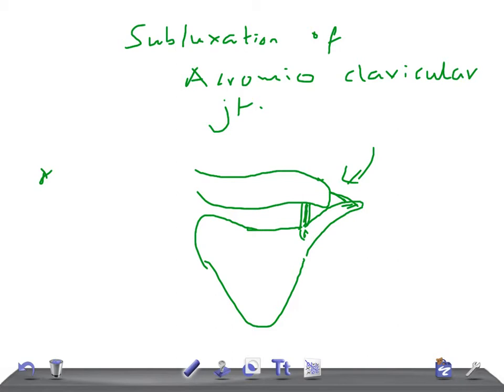Let me draw this. This is acromion, this is coracoid process, and this is clavicle. Okay guys, the acromioclavicular joint injuries are divided into three different grades: grade one, grade two, and grade three.